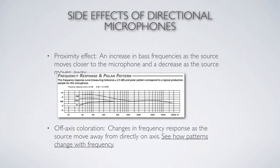On the Neumann page, you can see how the directional pattern changes with frequency. At low frequencies, the cardioid is no longer a perfect heart shape — especially on large diaphragm microphones, it becomes more spherical or omnidirectional. At high frequencies it becomes a narrower heart shape, more directional. The polar response will be different for different frequencies.